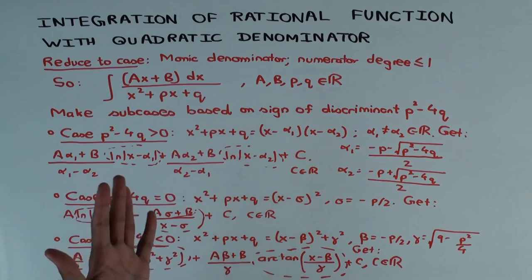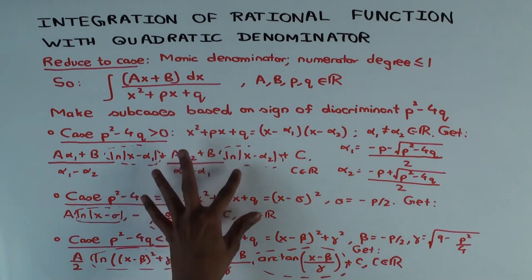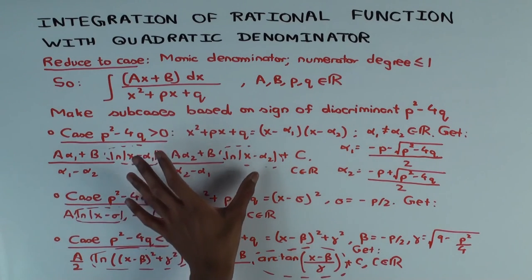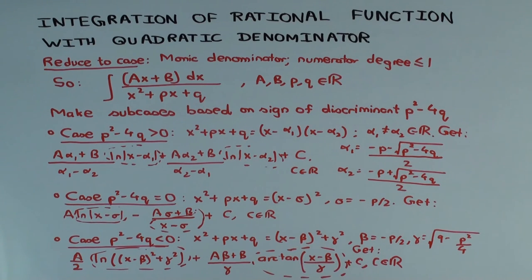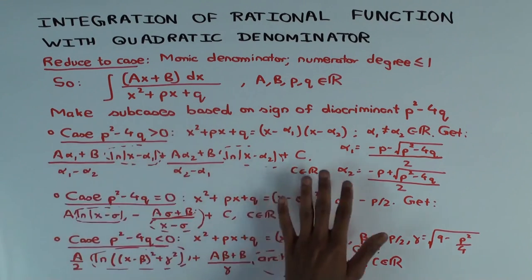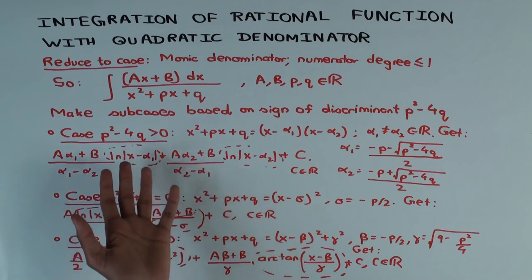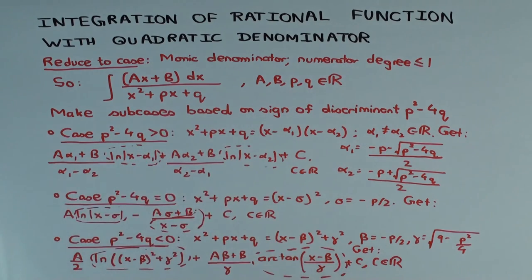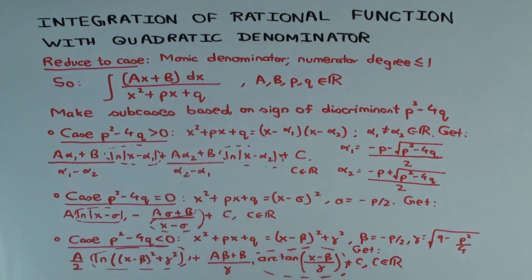In all three cases, the denominator controls the functions whose combinations you're taking, and the numerator controls the coefficients in a linear manner. The nature of the functions differs by case: distinct factors give two logs; a repeated factor gives a log and one over (X minus something); and an irreducible quadratic gives a log of the quadratic and an arctan of the completed-square expression. In practice, you compute the discriminant to determine which case you're in, then either apply the formula directly or retrace the derivation steps.